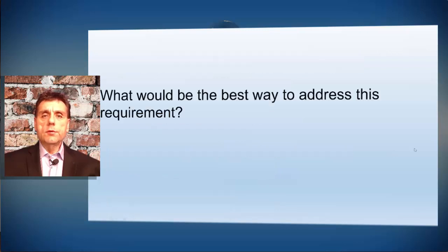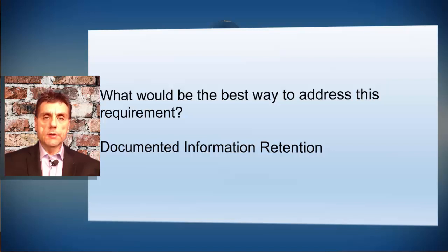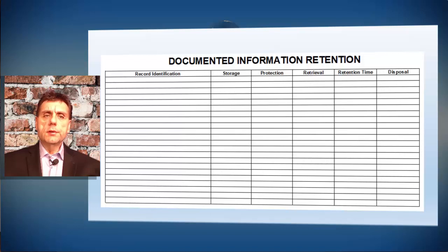We have to address the best way to keep our records. A documented information retention matrix, table, or form would be the best way to address the record information related to the standard requirement. In this particular case, the documented information retention table, form, or matrix should look something like this.